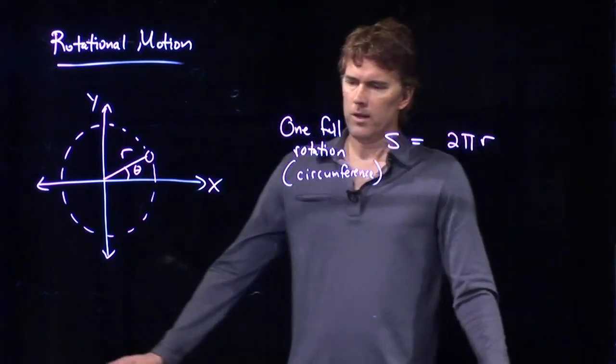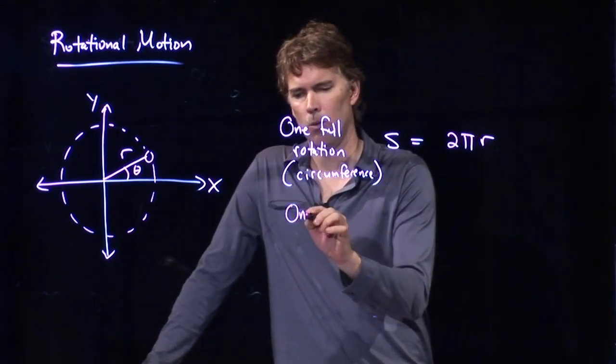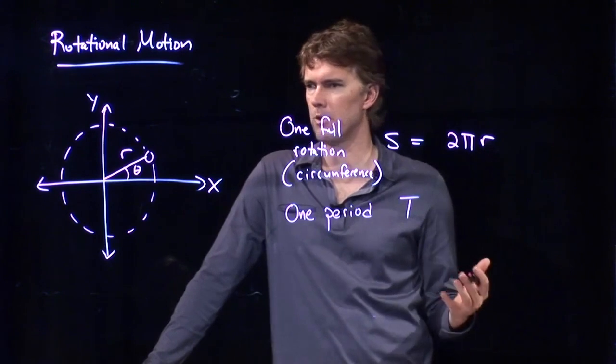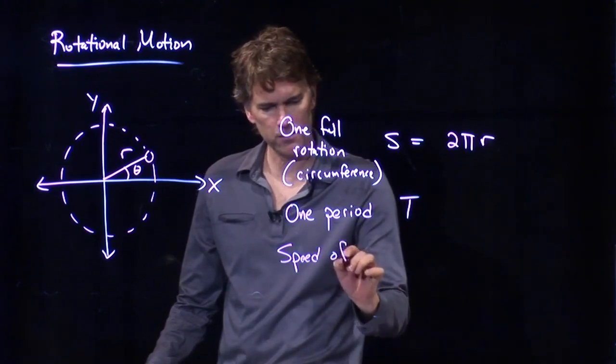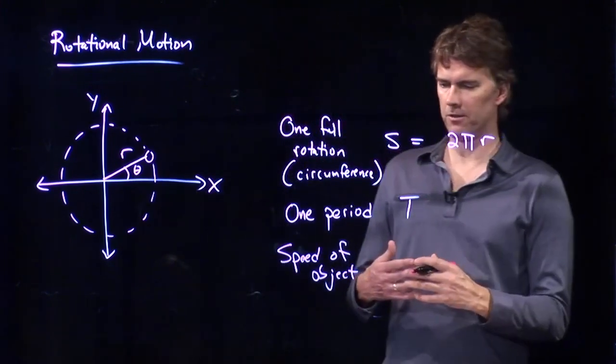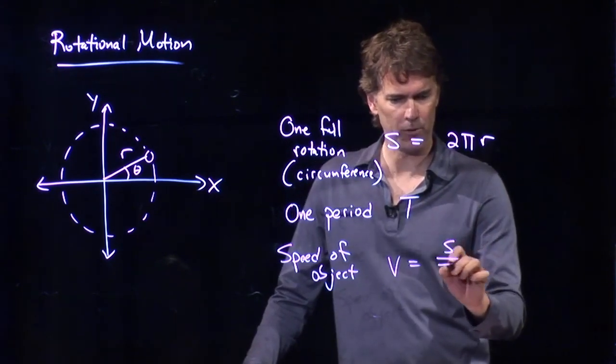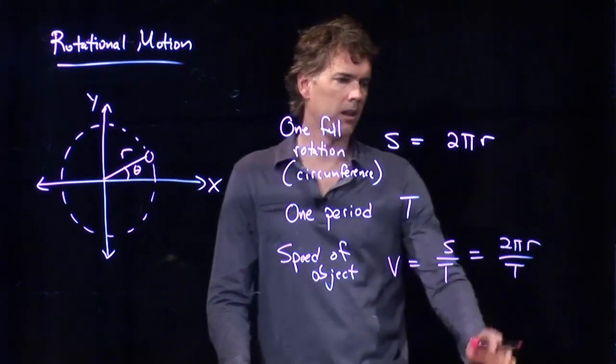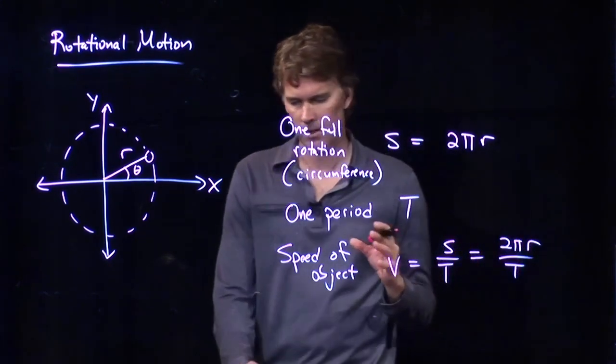So if I do one full rotation, and I do it in one period T, some measurement in time, then what can I say about the speed of that object? Well, speed is just distance over time, and so we can say it's S over T, which is 2 pi r over T. And the units work out right: r is meters, T is seconds, that's meters per second. Everything else is unitless.